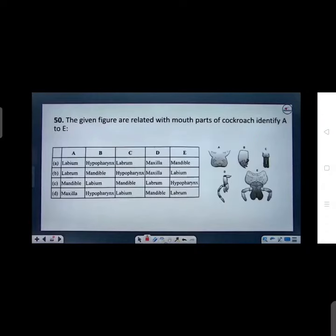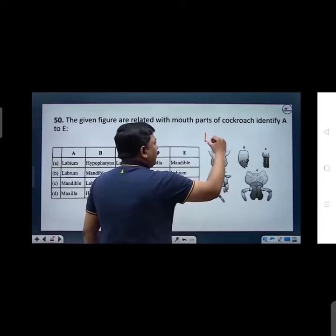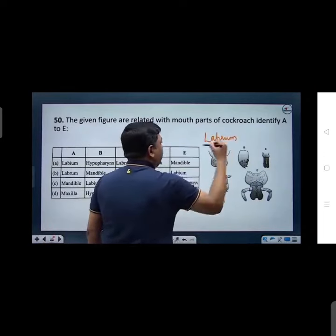Again, same diagram based question. These different mouth parts are made in front of you. First of all, yes commandos, let me mark it with a different pattern. A, what is this? Upper lip, labrum. A is labrum, right? Yes, labrum.